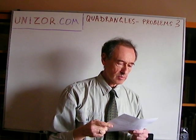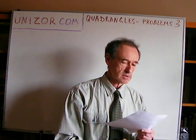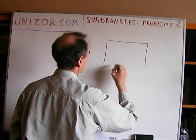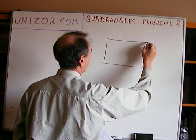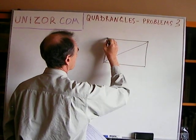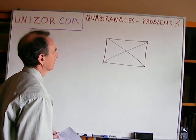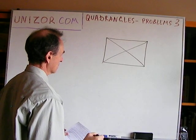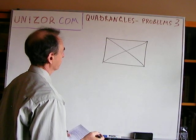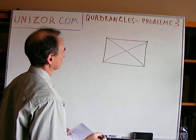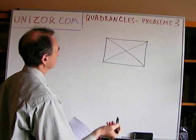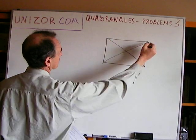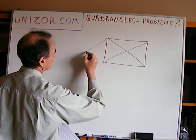Prove that a parallelogram with congruent diagonals is a rectangle. We have a parallelogram with congruent diagonals, and we must prove it is a rectangle. One approach: draw a line parallel to one diagonal.